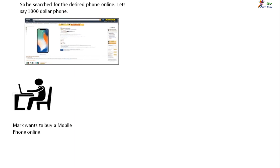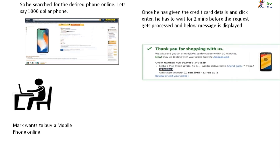He went to one of those online shopping websites — for our discussion purposes let's say it's Amazon. He went to Amazon, he searched for the desired phone. The phone is very expensive — a thousand dollar phone. It's the latest model of iPhone. He searched for it, he'd been saving money for a while to buy this phone. He entered the credit card details, all the details, and clicked on the Buy Now button.